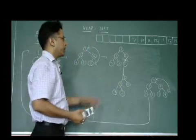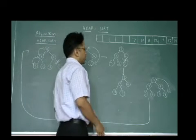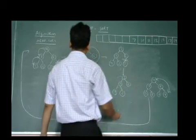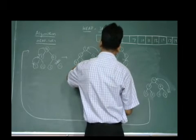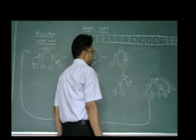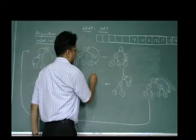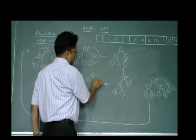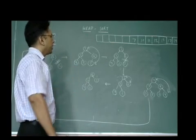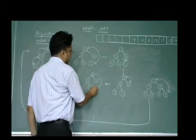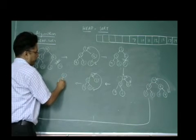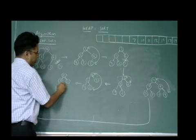Running the heapify function at root node: 3 is less than 5, 3 is less than 6, but 6 is greater than 5, so swapping takes place. After this the heap becomes: 6, 5, 3, 4, 2. Again we swap: after swapping it becomes 2, 5, 3, 4, and 6. The 6 is removed and placed in the sorted array.